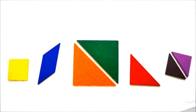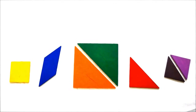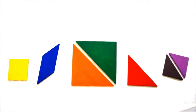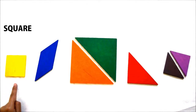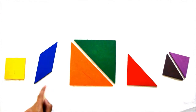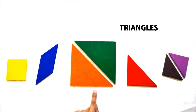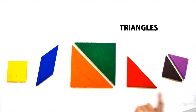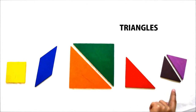We can arrange these pieces in any order and create different shapes. The basic shapes used in a tangram are: one square, one rhomboid, two large sizes of triangle, one middle size of triangle, and two small sizes of triangle.